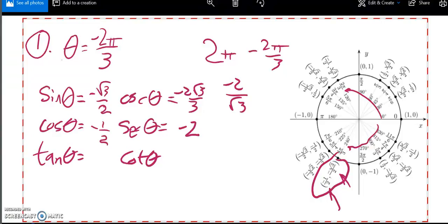Tangent is y over x, or sine over cosine. So notice the negative 1 halves will divide out, so tangent would be positive root 3, a negative divided by negative. And cotangent would be 1 over that, which would be root 3 over 3.